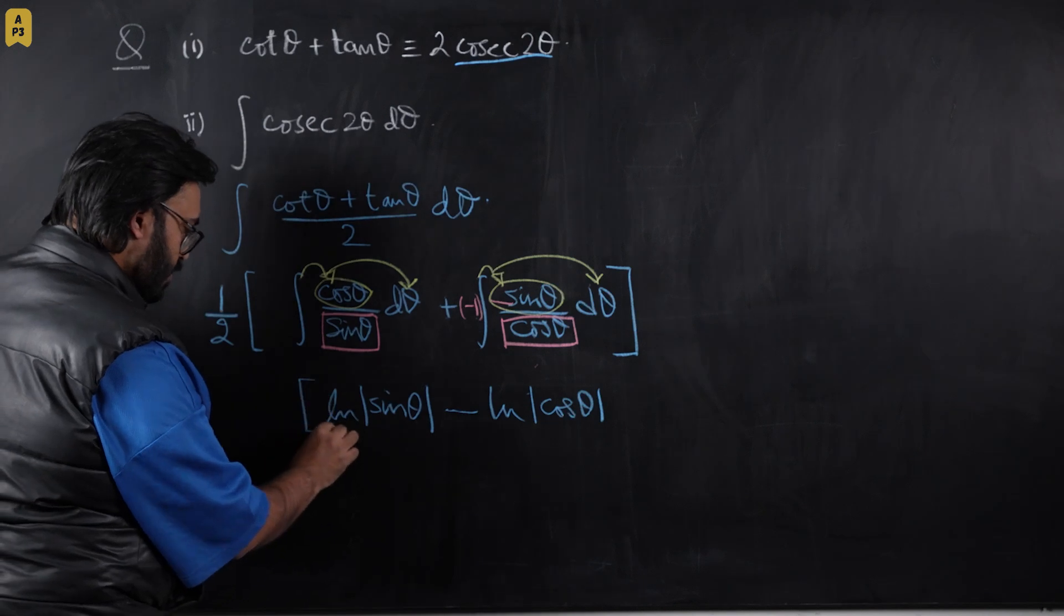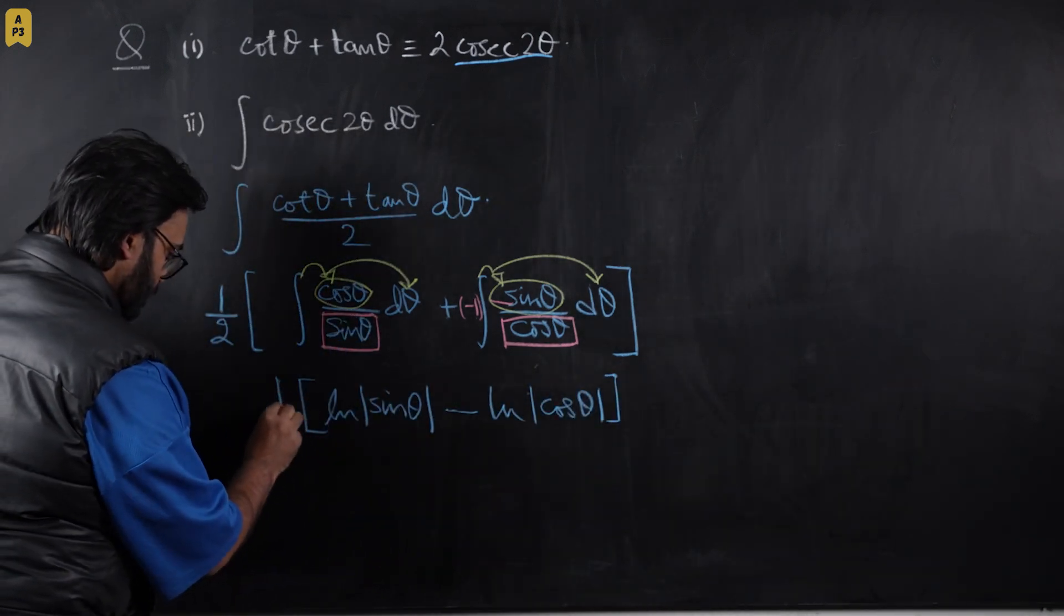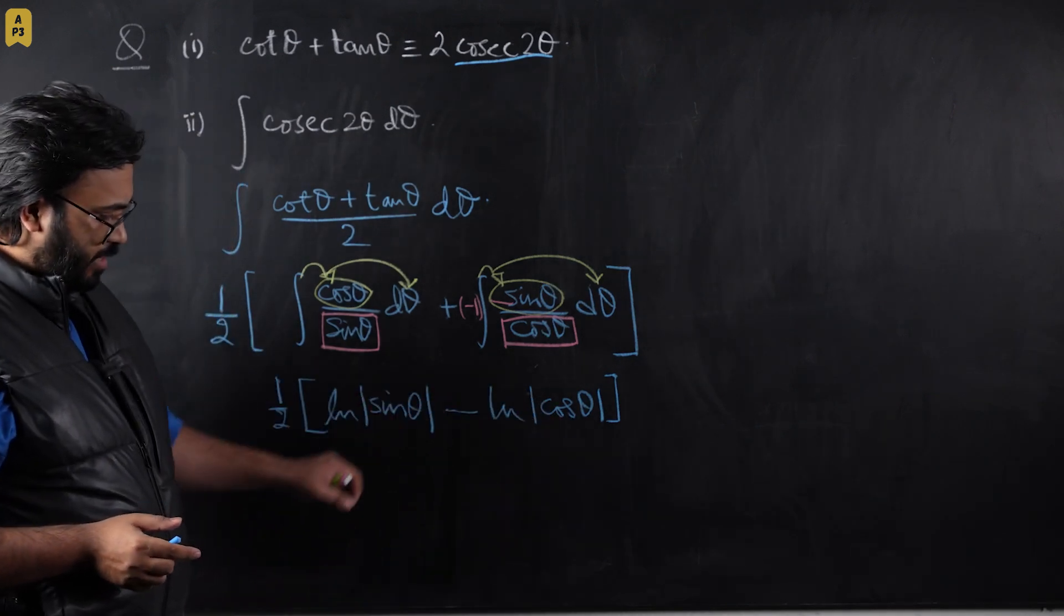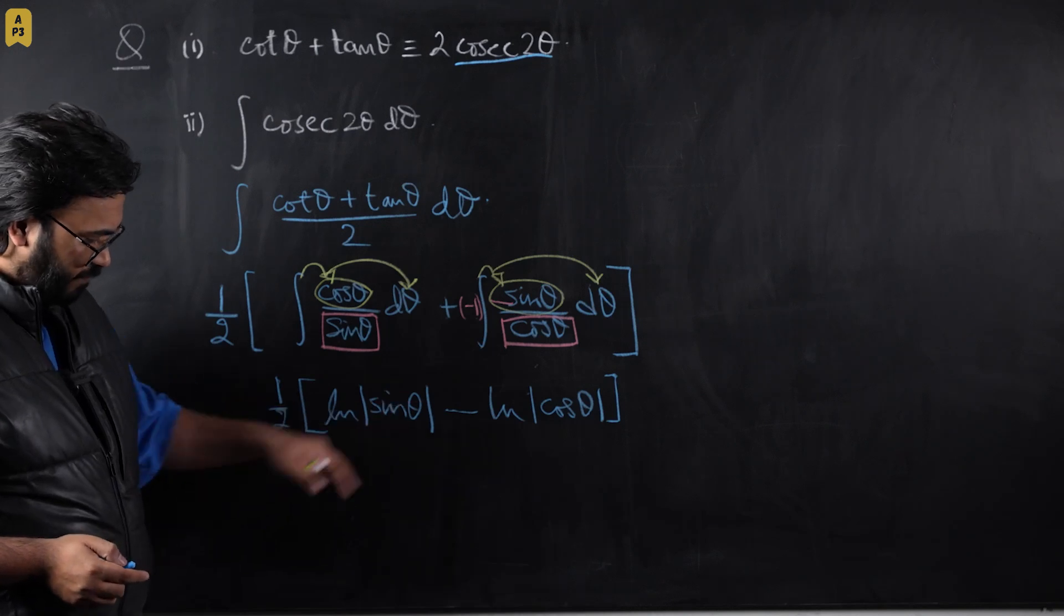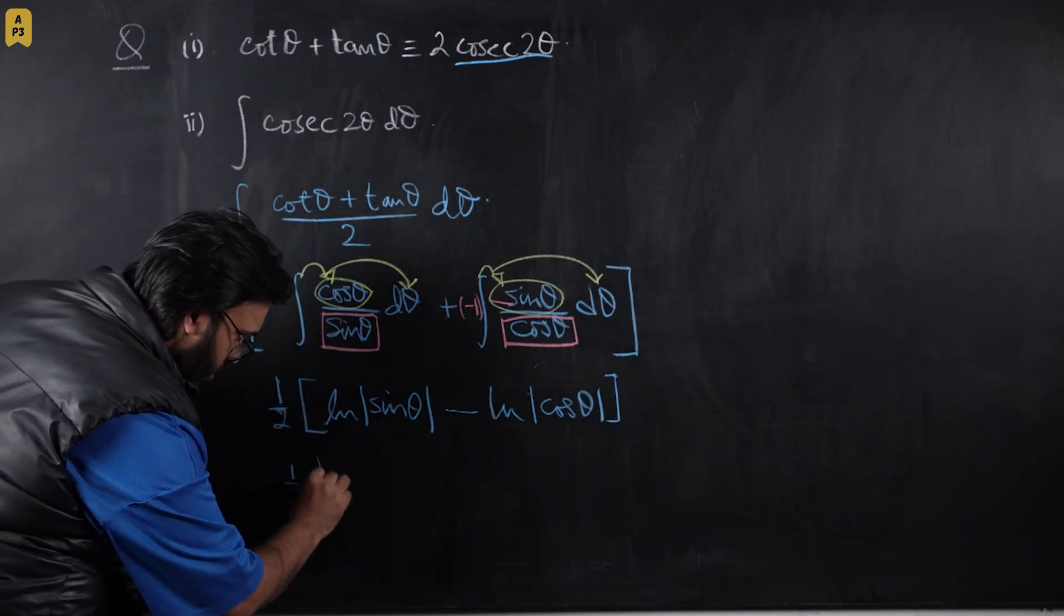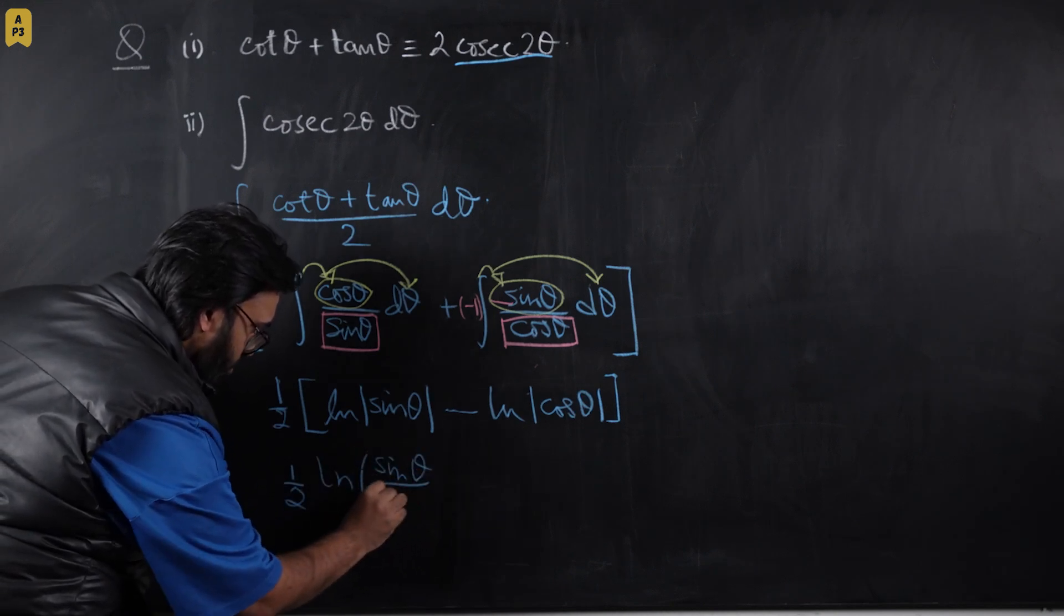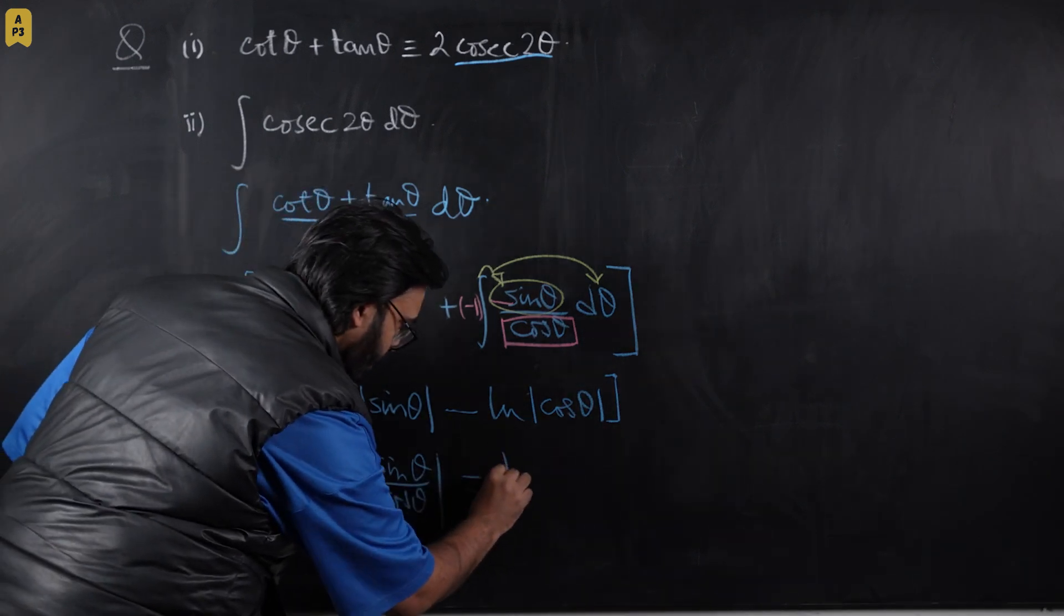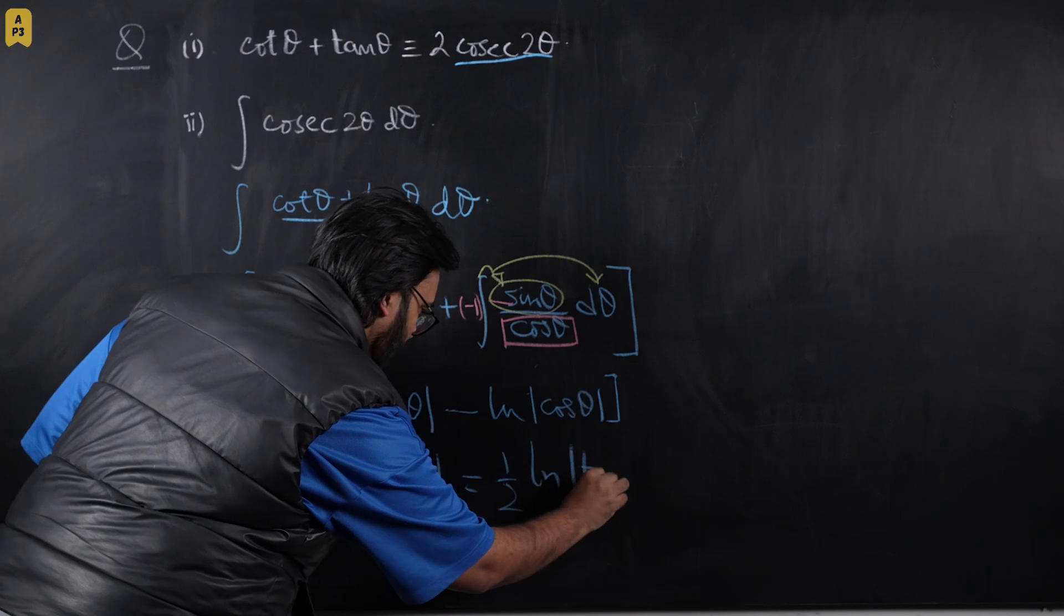And this whole thing is being divided by 2. Now we know when two logarithms are being subtracted, they can, the arguments can be divided. So this, if this is converted to a single logarithm, it would become 1/2 log of sin θ / cos θ, and this will become 1/2 log of tan θ.